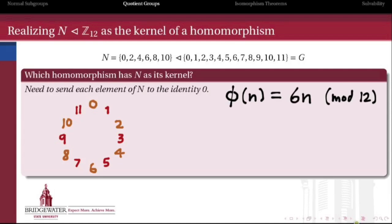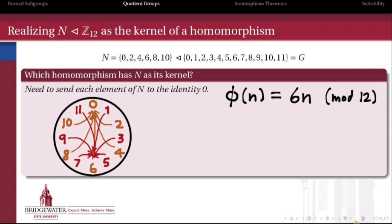What happens to the other elements, 1, 3, 5, 7, and 11, the other coset? Well, it turns out all of those, when we multiply them by 6, give me something that's congruent to 6 mod 12. So the kernel of this homomorphism is exactly N, the normal subgroup {0, 2, 4, 6, 8, 10} itself.